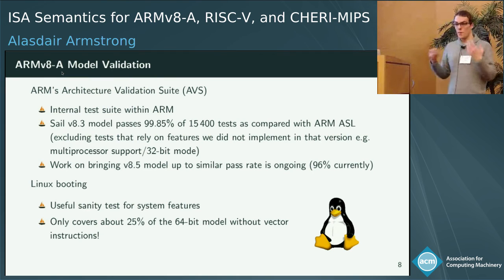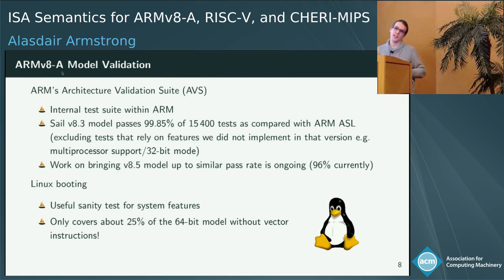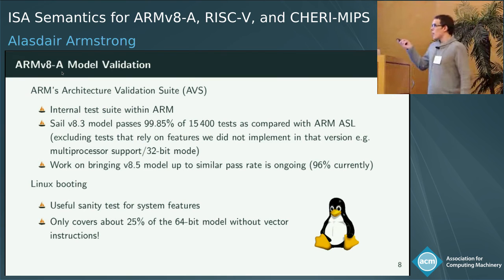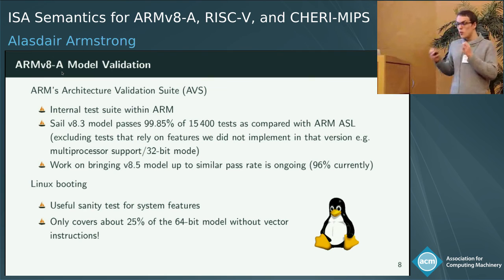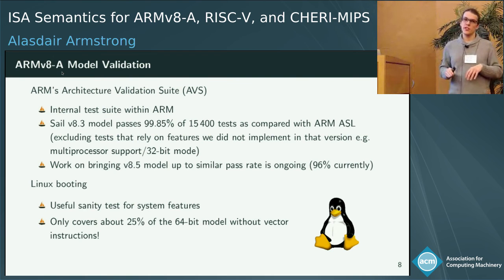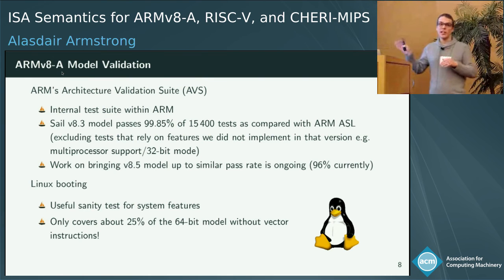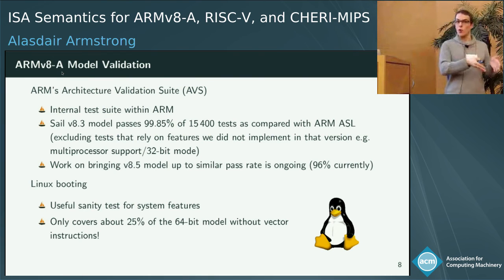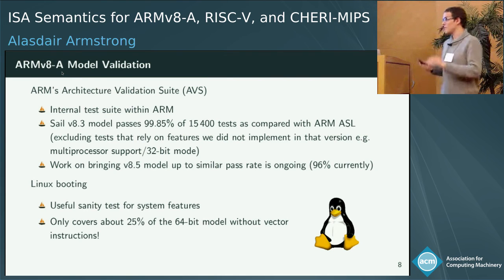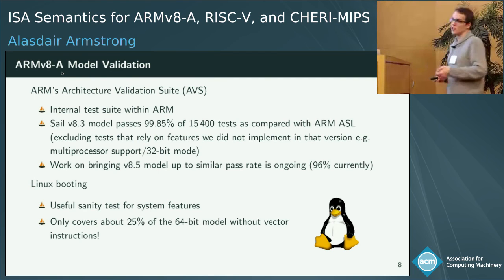We also test the model by booting Linux on it, which is a useful sanity test for system-level features. To do that, we implement a few extra things like an interrupt controller and a UART. Interestingly, booting Linux only covers about 25% of the 64-bit instructions, not counting vector instructions. So while it seems like a thorough test, Linux only uses about 25% of the architecture during the boot process. If you're doing security proofs, you might really care about all those instructions, because a malicious attacker won't restrict themselves to a nice subset.